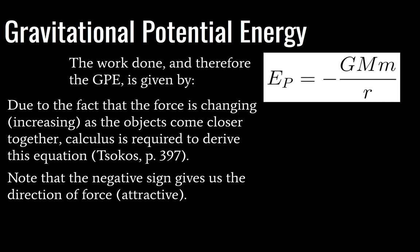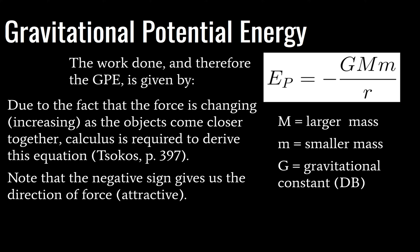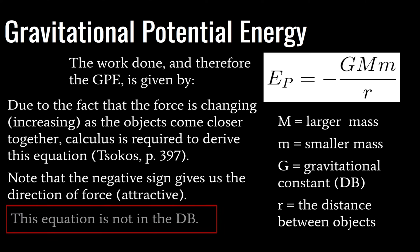Note that we have a negative sign in the equation, and that's telling us the direction of force. Gravitational force is attractive. When we look at electric force, it could be repulsive or attractive — if the objects are repelled, that negative sign would become a positive sign. So the negative sign tells us we have an attractive force. Defining our variables: large M is the larger mass, small m is the smaller mass, big G is the gravitational constant from the data booklet, and r is the distance between objects — center to center, or center of mass to center of mass. Note that this equation is not in the data booklet.